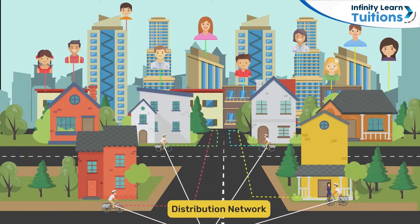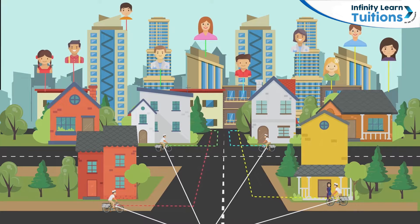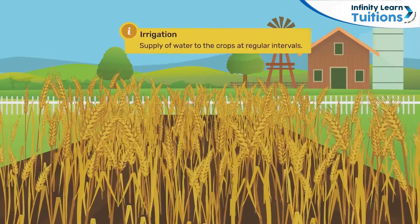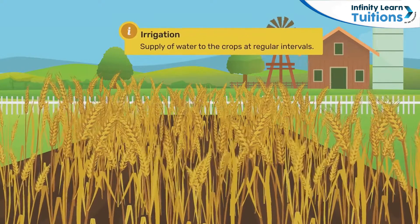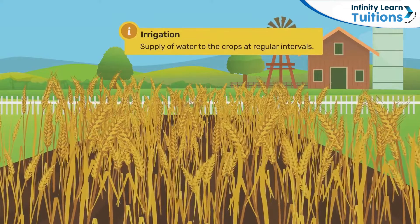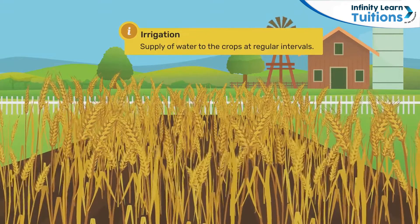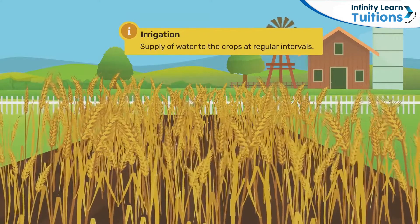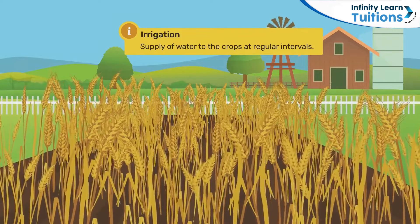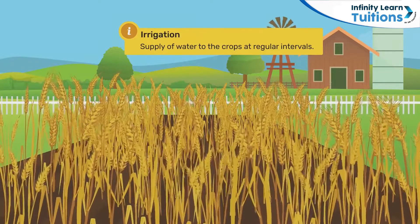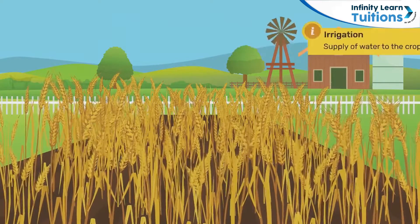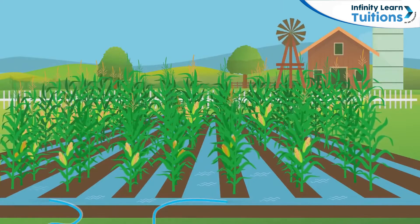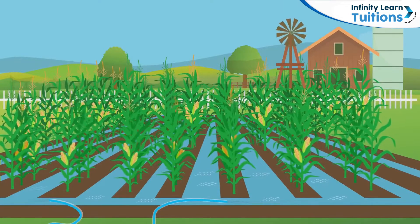Can you think of a distribution network other than that of the Dabbawalas? Well, a good example of distribution networks is the irrigation system. That's right — the system by which water is supplied at regular intervals from a source to crops. Let's look at how farmers use the irrigation system in crop production.